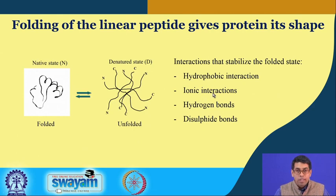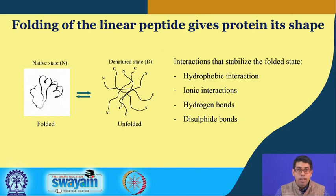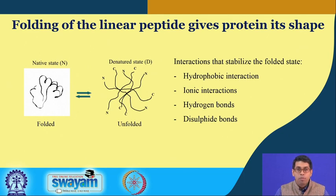The second type of interaction is ionic interaction — interaction between positively and negatively charged groups. For example, the side chains of aspartic or glutamic acids are negatively charged and can interact with the side chains of arginine and lysine, which are positively charged. These ionic interactions are found on the surface of the protein because they have no problem interacting with the polar solvent.